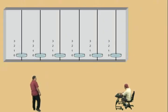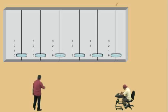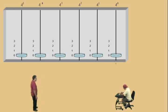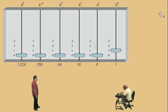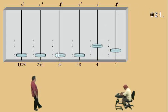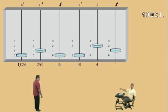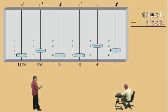Here we go, Charlie! Now we're working in base 4. So we'll list our place values. Let's go ahead and enter our base 4 number. We'll put a 1 there, a 2 there, a 0 there, a 0 there, and a 1 there. Now from that number, we're going to subtract 3, 2, 2, 3 base 4. Don't get scared!